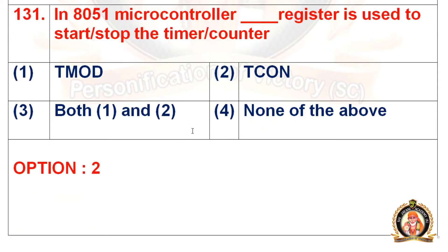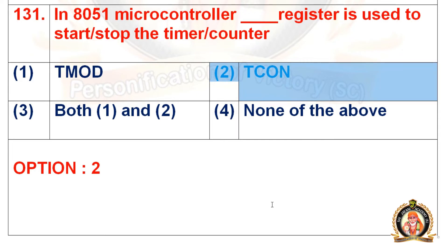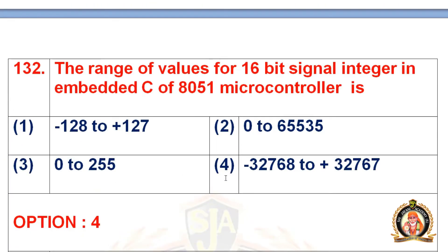Question 131: In the 8051 microcontroller, dash register is used to start or stop the timer or counter. Options are TMOD register, TCON register, both 1 and 2, and none of the above. The right option is option number 2, that is TCON. In 8051, TCON register is used to start or stop the timer or counter.